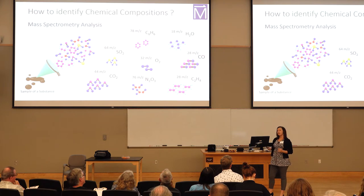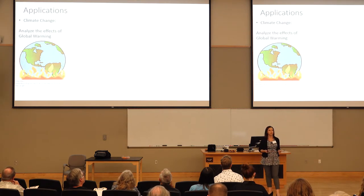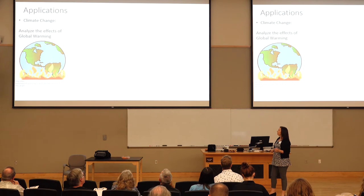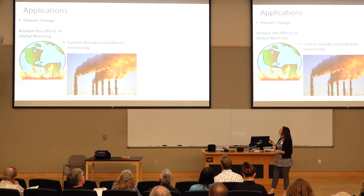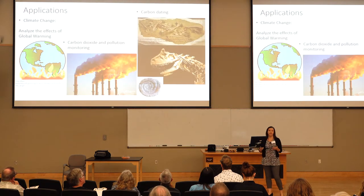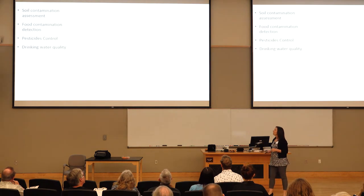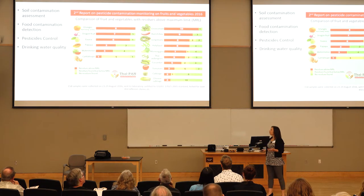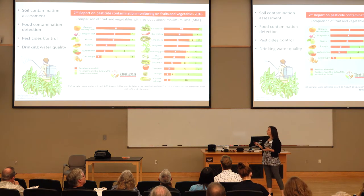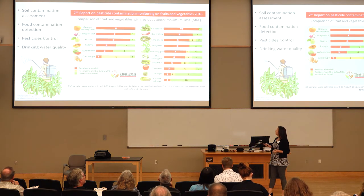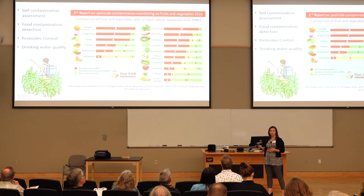Mass spectrometry analysis can be applied in climate change to evaluate the effects of global warming in plants and our environment, to monitor pollution, to estimate the age of bones and fossils by carbon dating, and to evaluate soil and food contamination by pesticide use. This chart shows in red pesticide residues above regulated limits in fruits and vegetables from Thailand.